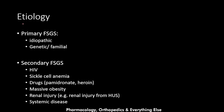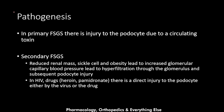FSGS has two types: primary and secondary. The primary type has two subtypes — idiopathic and genetic or familial. The secondary type is caused by HIV, sickle cell anemia, drugs like pamidronate and heroin, massive obesity, renal injury such as from hemodynamic syndrome, and systemic disease.